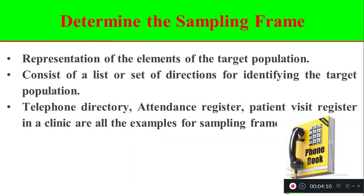The second step is defining the sampling frame. The sampling frame is the list of elements or subjects obtained from the target population. It consists of directions that tell who are all going to be included from the target population. It is a register or list that has details about all the subjects, particularly those coming from the target population.